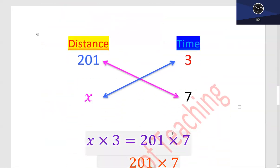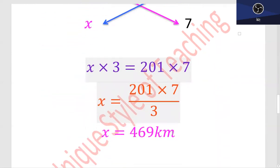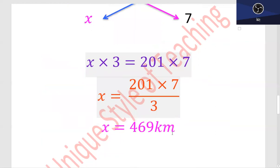This is a direct relation, so we use cross multiplication concept. You will find the distance which is 469 km.